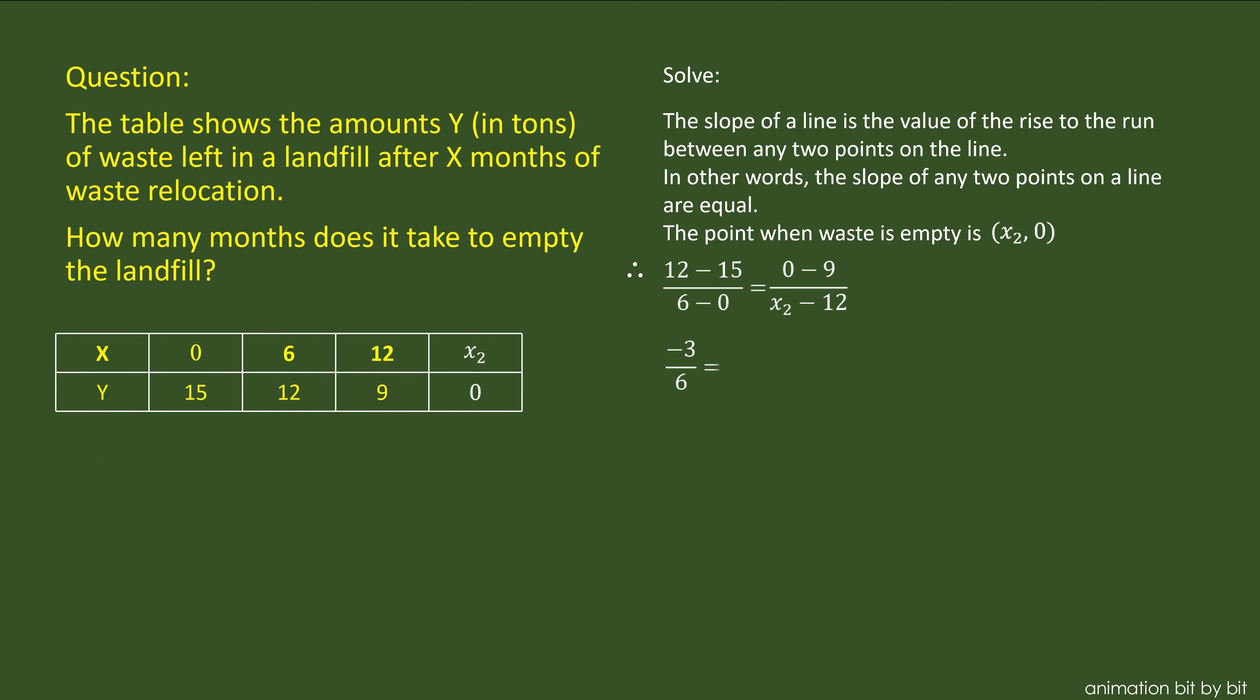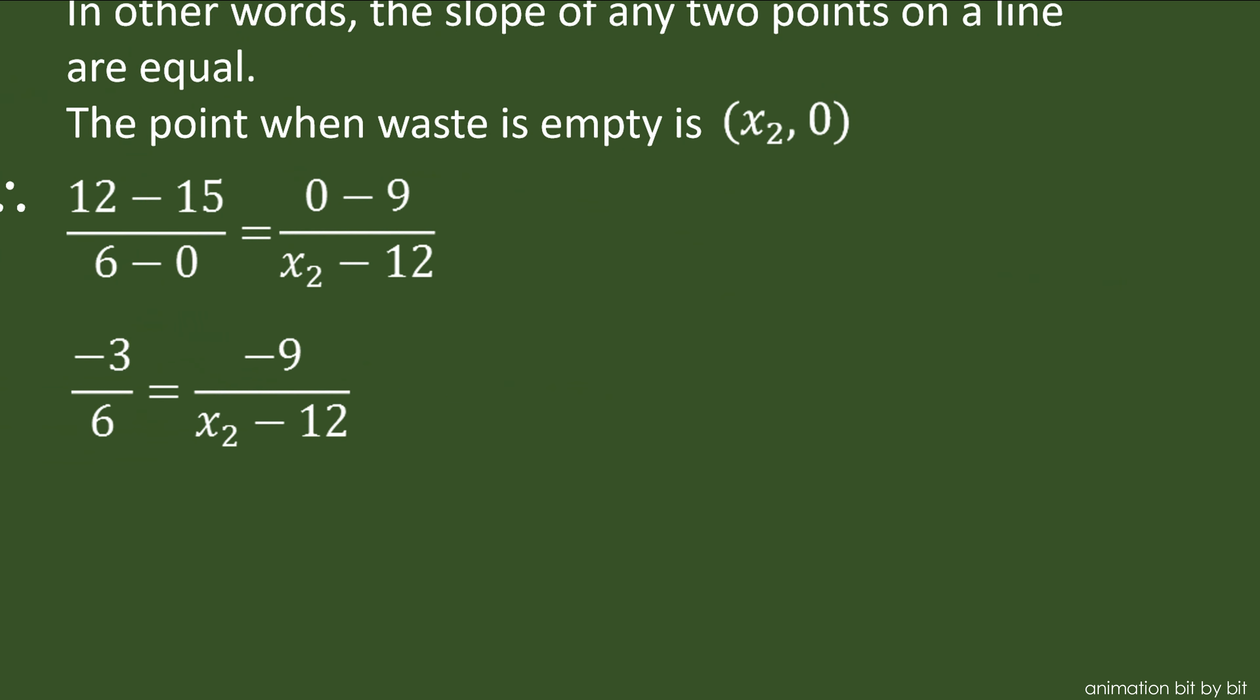Now to find the slope, subtract 15 from 12 and 0 from 6, and then on the other side, subtract 9 from 0 and 12 from x₂, which we don't know yet.